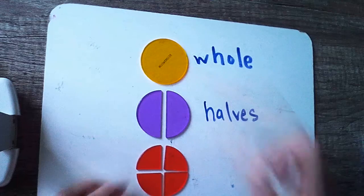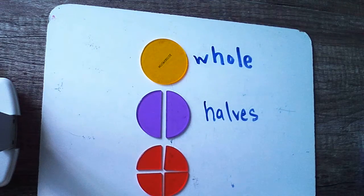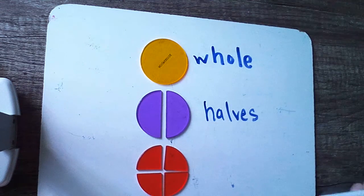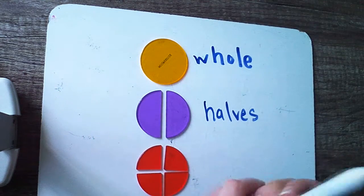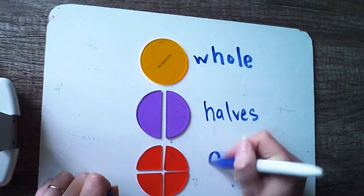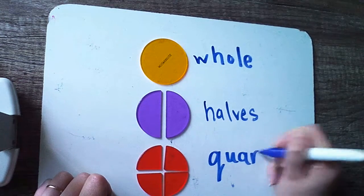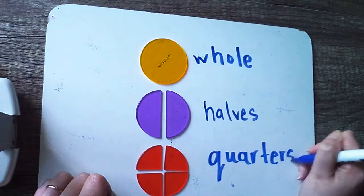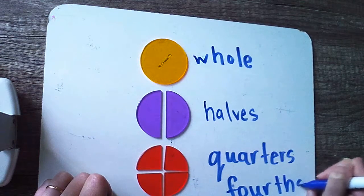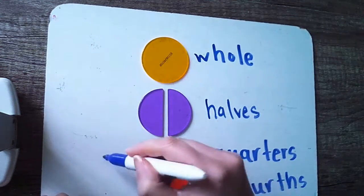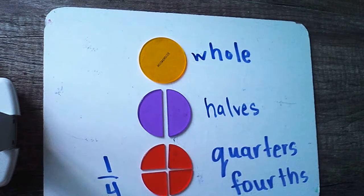Imagine this is the circle, the whole is a pizza, and we want to share it with four of our friends. We can do that by breaking our whole apart into four quarters. Keeping in mind that quarters are the same as fourths. And when we write that with numbers, it looks like this: one fourth, one fourth.